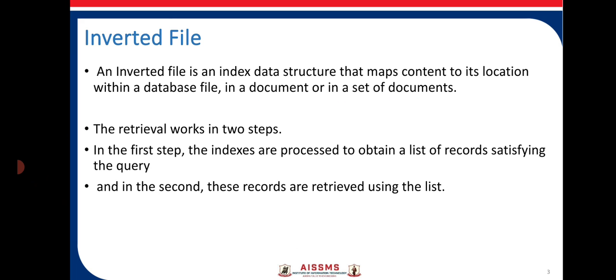The retrieval works in two different steps. First, the index is processed to obtain a list of records satisfying the query. Second, these records are retrieved using that list. So for an inverted file, we keep information in a multilist format where actual records are stored as a single list and indexing is provided for them.